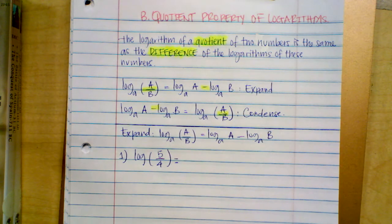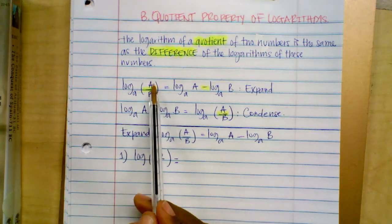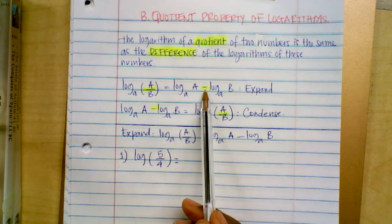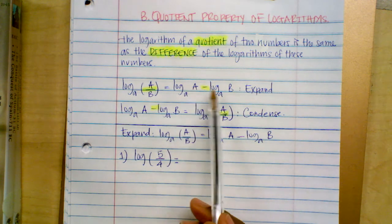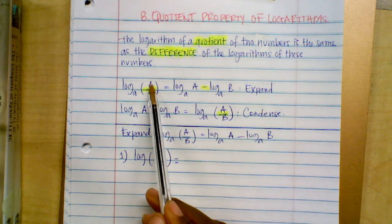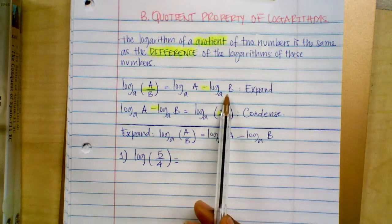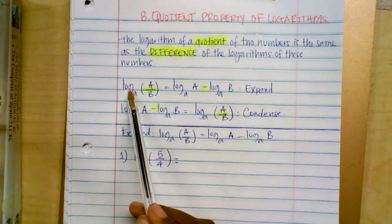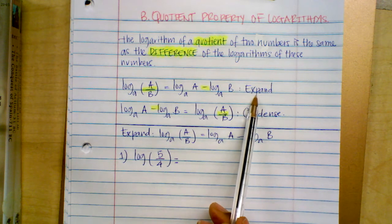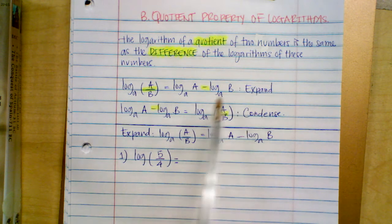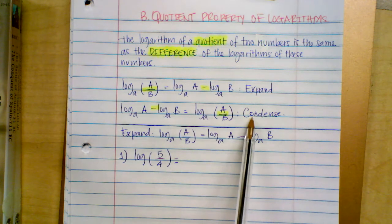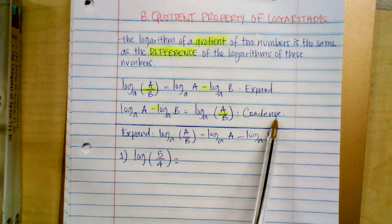So what do we mean? If you have a log where the number within the log is a quotient, it's going to be equal to the difference of those numbers. We can go from one single log to two logs — we call that the expanded form. We can also go from two logs to one log — we call that the condensed form.